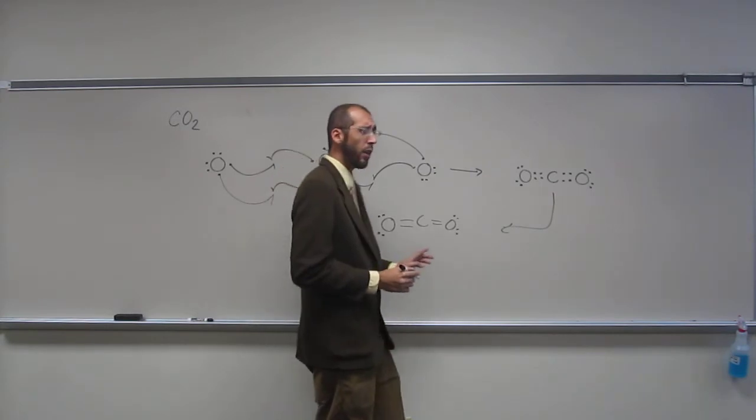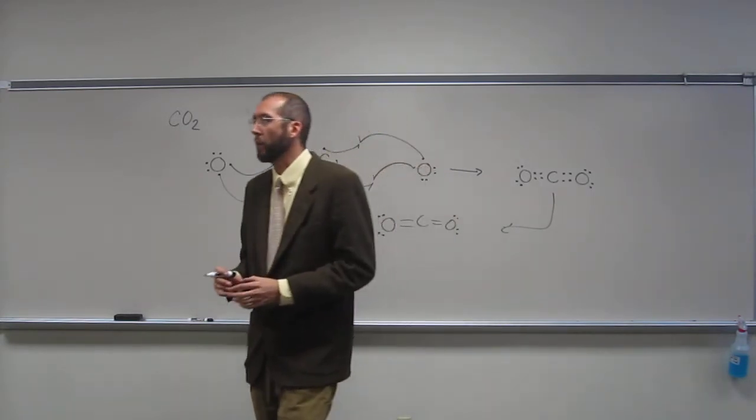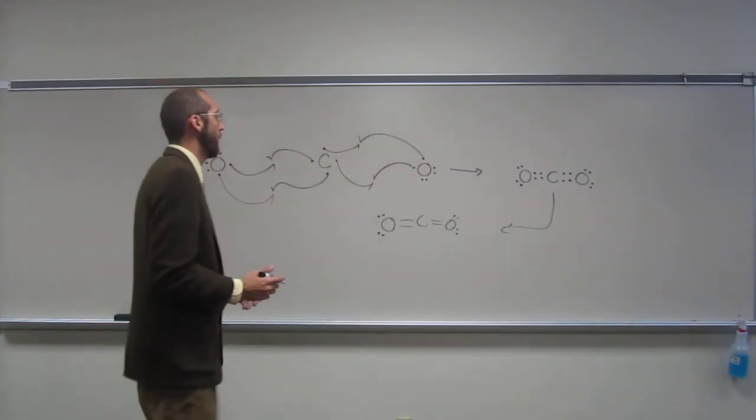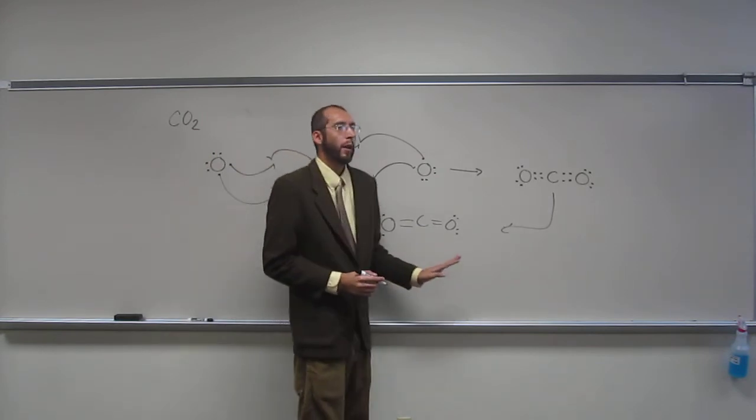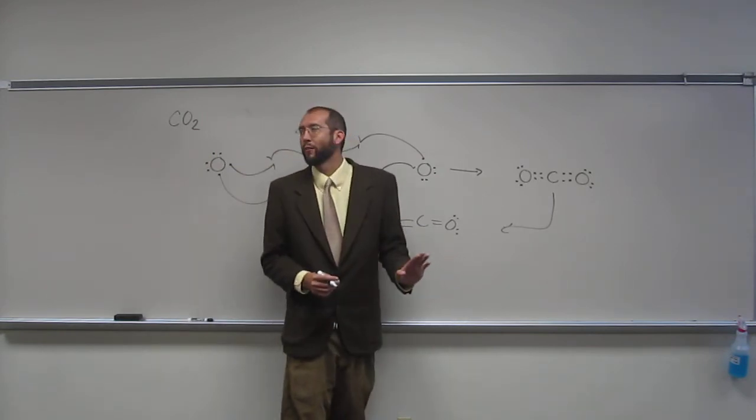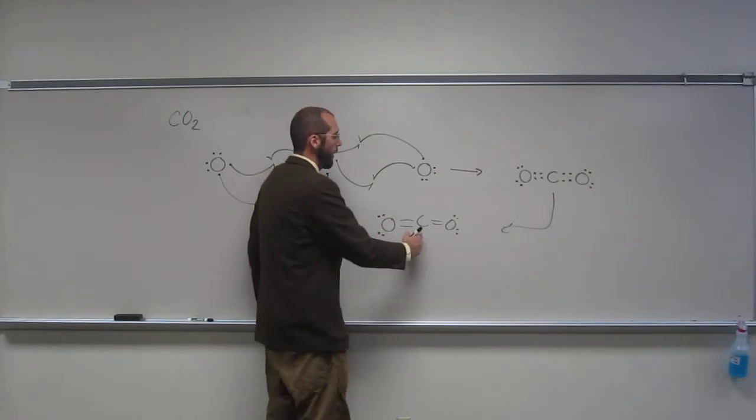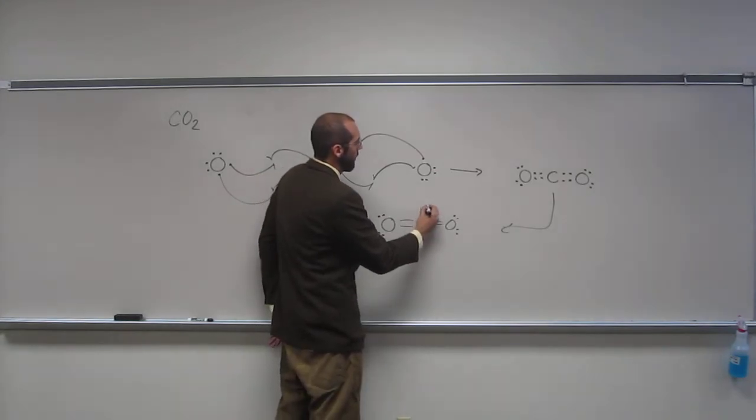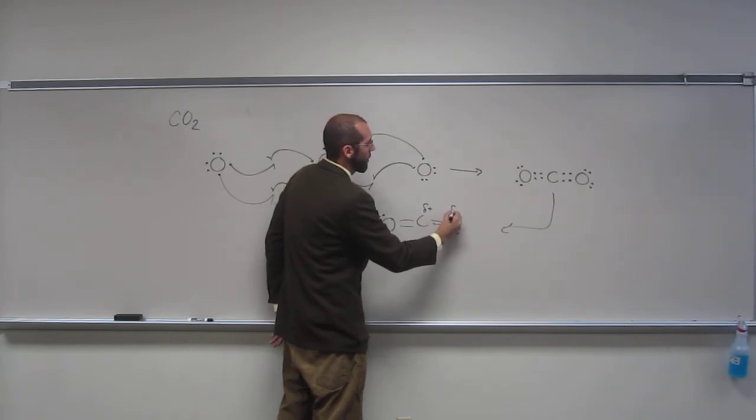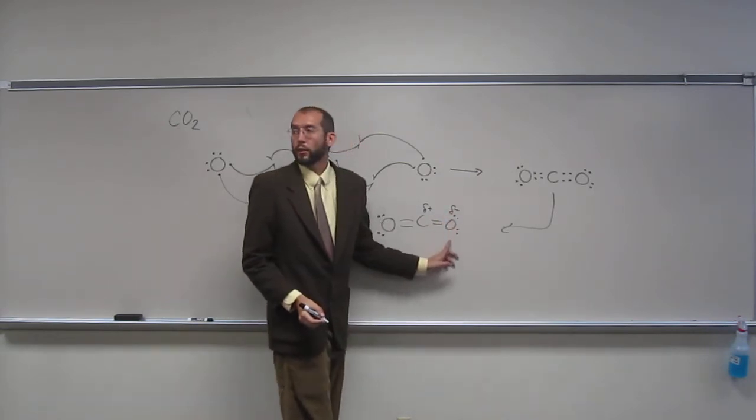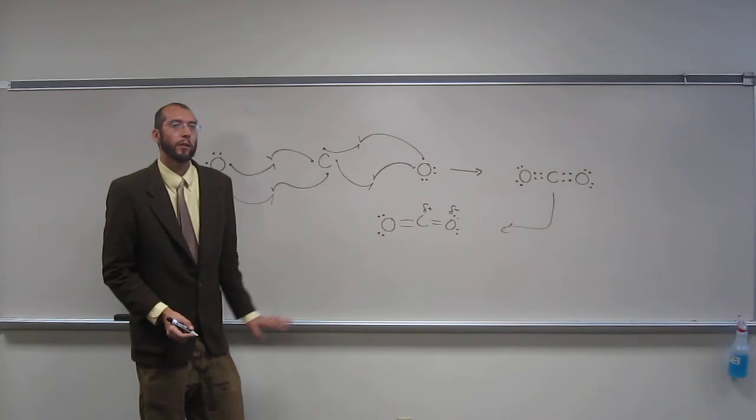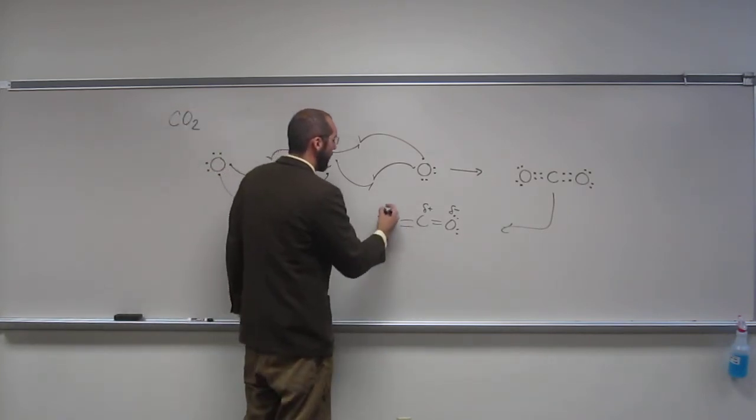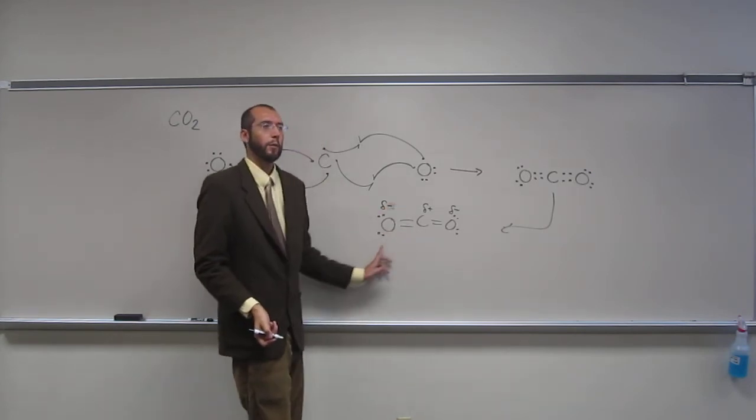So, if I said, which way is the negative charge being pulled in each of these bonds, or where's the partial positive and the partial negative in these bonds? So carbon, when looking at this bond here, is going to have a partial positive and the oxygen will be partial negative. Same thing over here, partial positive and partial negative there.